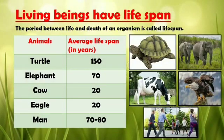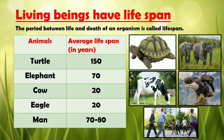Living beings have a lifespan. The period between the life and death of an organism is called lifespan. Organisms take birth, become adult, reproduce, become old and die. Different animals have different lifespans. The average lifespan of a turtle is 150 years, an elephant can live for 70 years, a cow lives for 20 years, an eagle 20 years, and a man can live for 70 to 80 years on average.